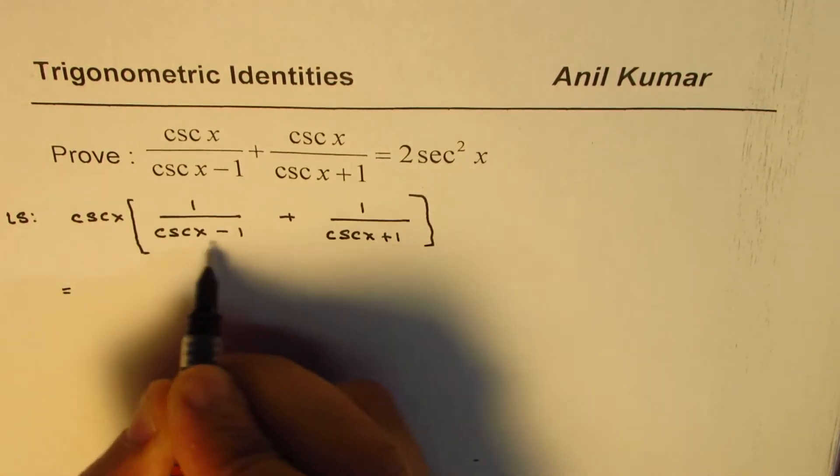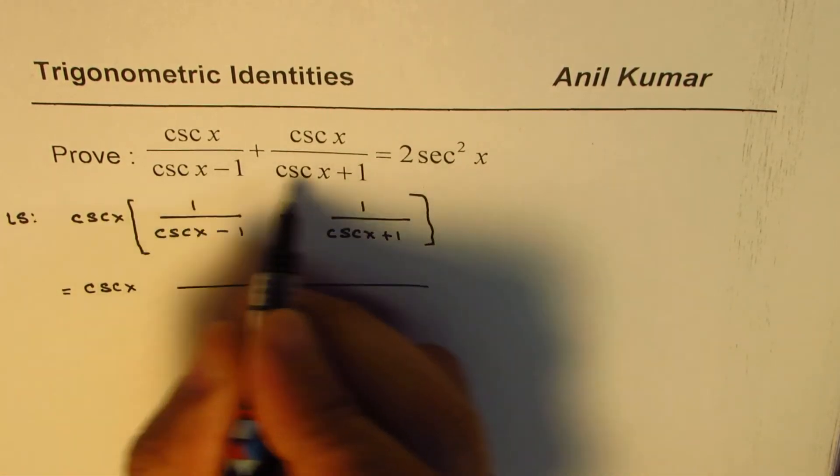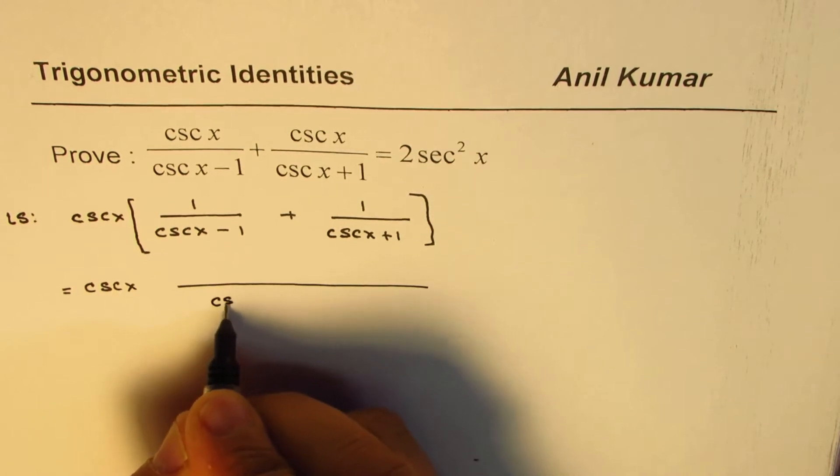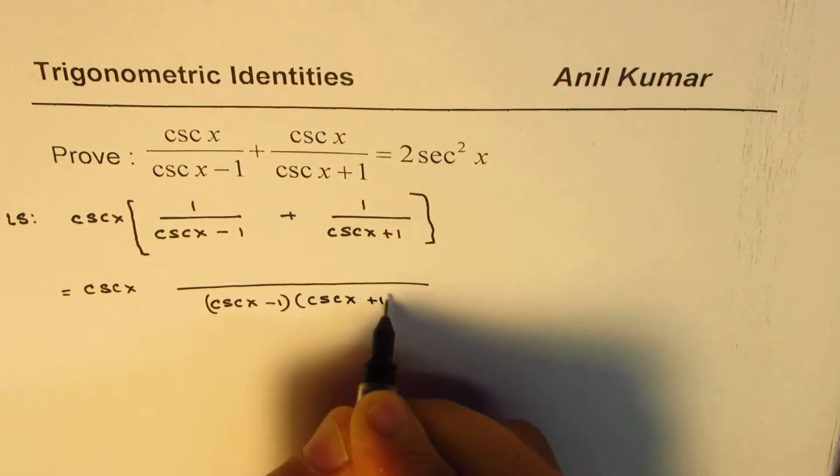Now, we can take a common denominator here, which is product of these two, which is cosecant x minus 1 times cosecant x plus 1.